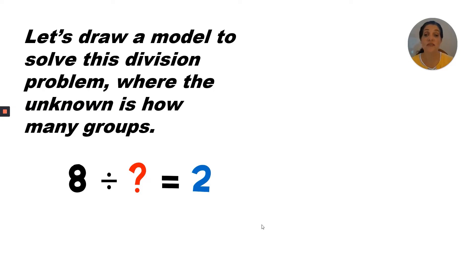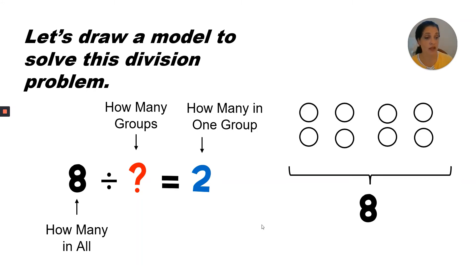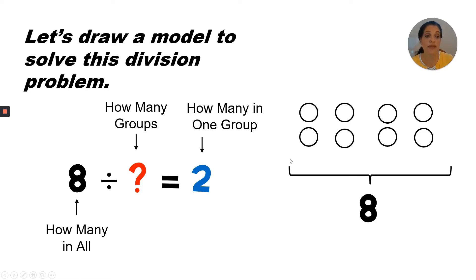Let's draw a model to solve this division problem where the unknown is how many groups: 8 divided by some number — the number of groups — equals 2. We're going to start with 8 in all, so we've got an 8 on the bottom under the bracket to label how many in all. Now we don't know how many groups, so we can't yet draw our boxes. But we do know how many in one group, so that's why I put 2 in each column until I got to 8. How many in one group is always the number of objects in a column; how many groups is always the second number in a division equation.